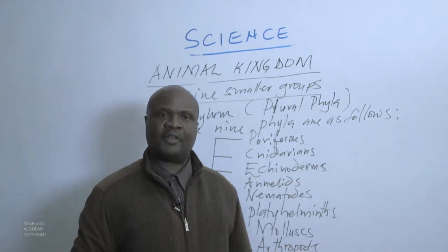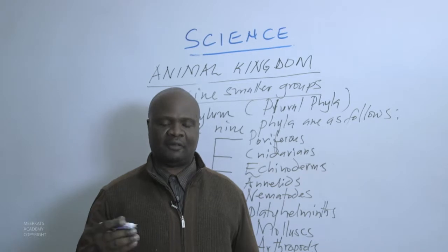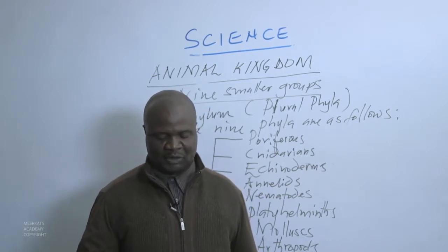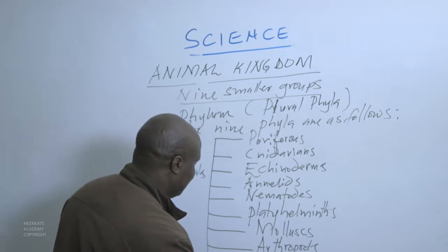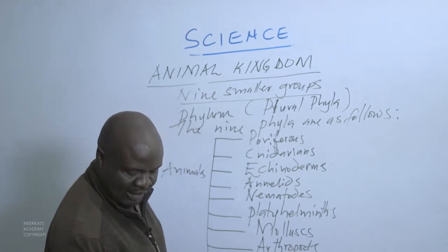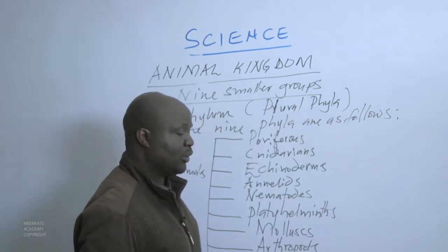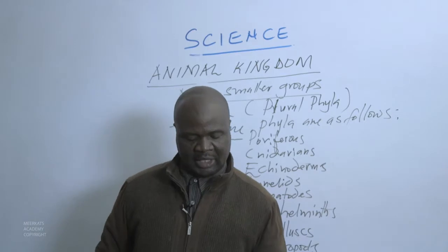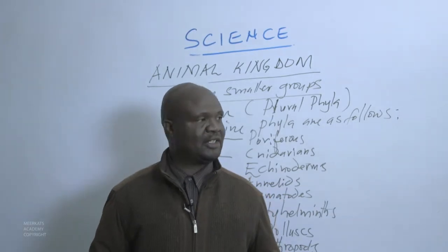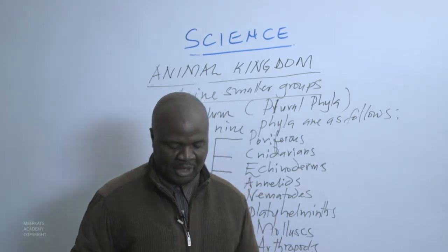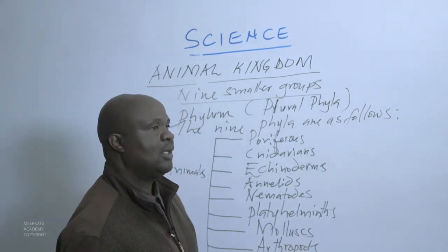The eighth phylum is Arthropods. With the Arthropods, we know there are a lot of insects present there. They have their own characteristics, body segments, and an exoskeleton. The ninth and last phylum is Chordates, where we have the large animals. The last phylum of Chordates is where huge and big animals are present — animals that have backbones and depend on their skeleton and nerves.